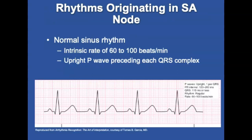Some rhythms originate in the SA node. Normal sinus rhythm arises in the SA node with an intrinsic rate of 60 to 100 beats per minute, with a regular rhythm and minimum variations between the RR intervals. The P waves are upright and precede each QRS complex. The PRI interval is 0.12 to 0.20 seconds, and the QRS is 0.11 seconds or less.